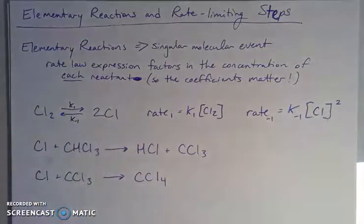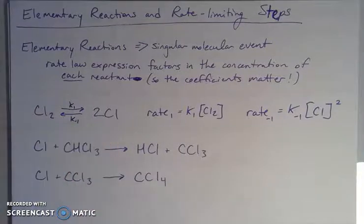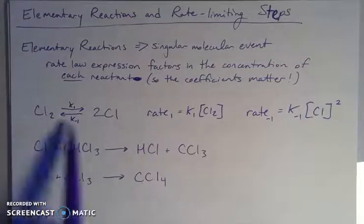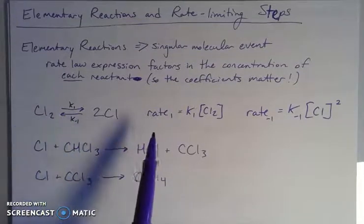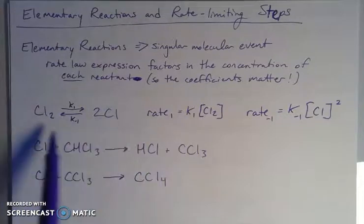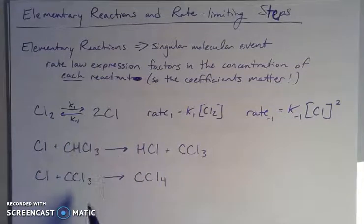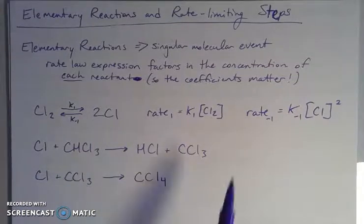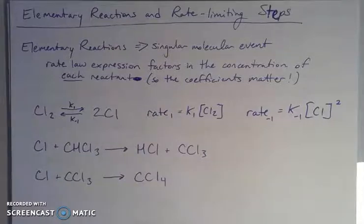That squared comes from the 2 as a coefficient, and because it's an elementary reaction, that coefficient matters — the number of reactants matters. So we would say this is a unimolecular reaction going in the forward direction and a bimolecular reaction going in the reverse direction, because it's all about the number of reactants, and that gives you the overall order of the reaction.